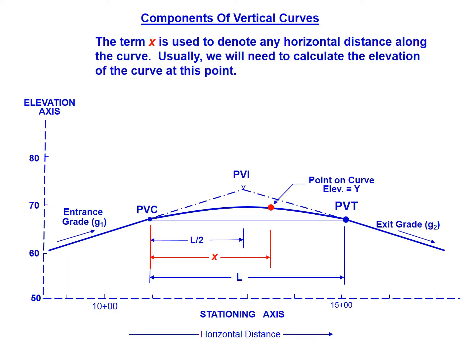We use the term X to denote any horizontal distance along the curve. X can be as small as 0, which would align with the point of the PVC, or as long as L, which is the full length of the curve, which would correspond to the PVT. Usually we're looking for the elevation of the curve at the point X, so X is typically some point of interest in the analysis.